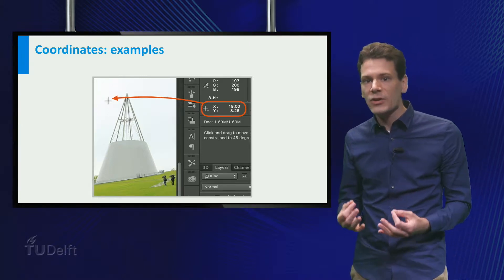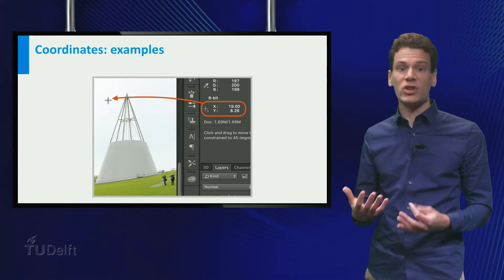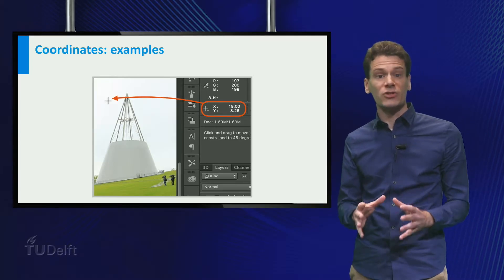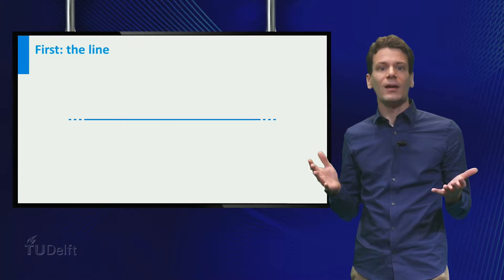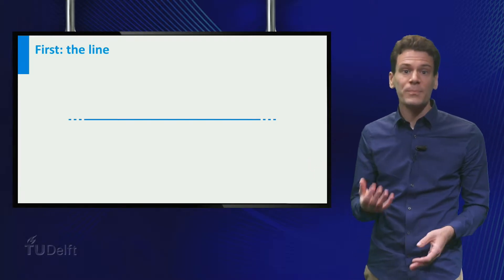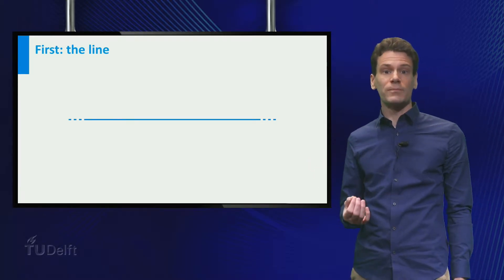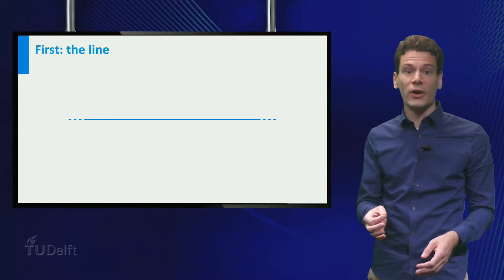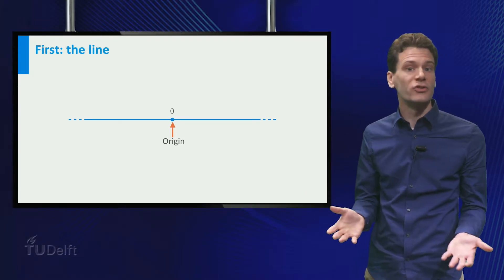To understand how you can use numbers to describe position in a plane, let's take a step back and look at positions on a line. To indicate position by numbers, we need to make a couple of choices. First, we choose the point with position zero. This is called the origin.